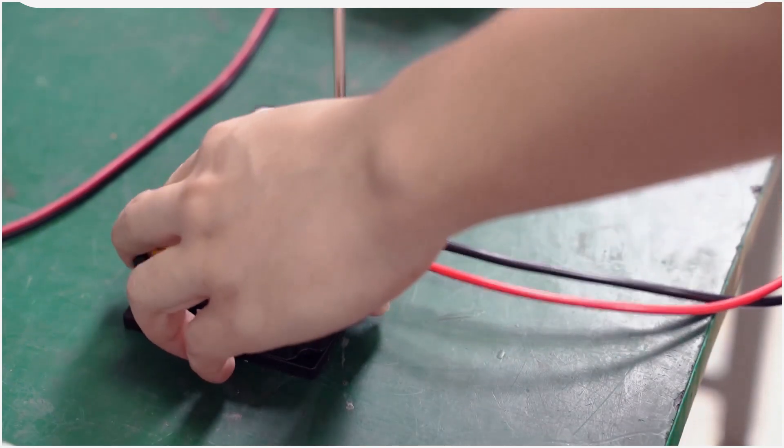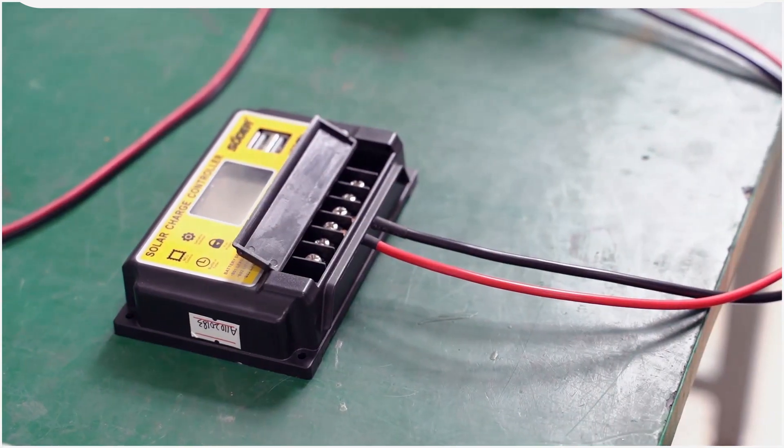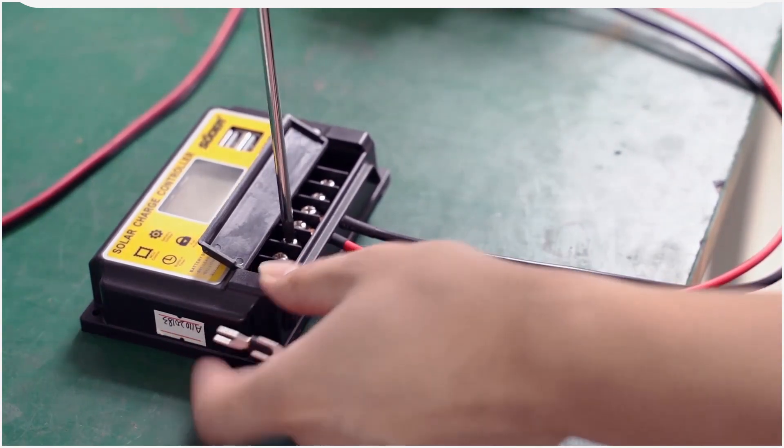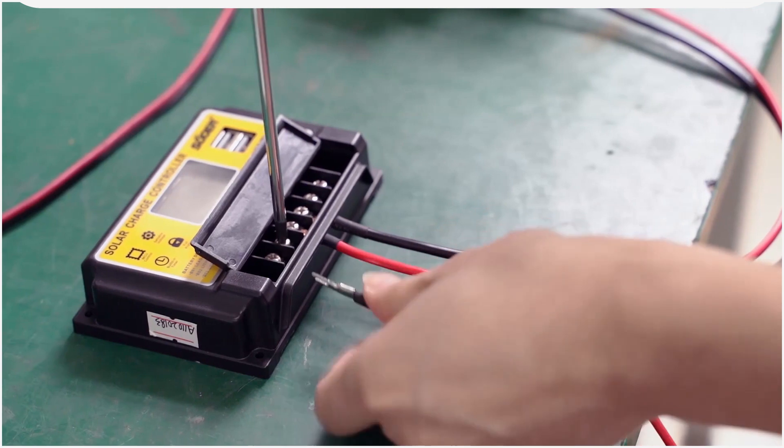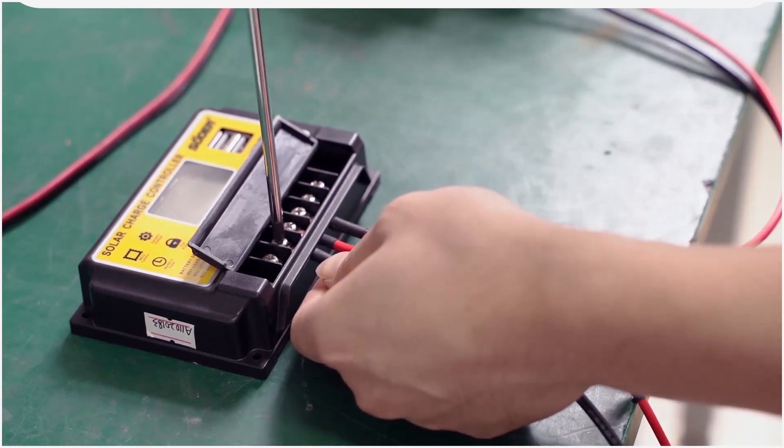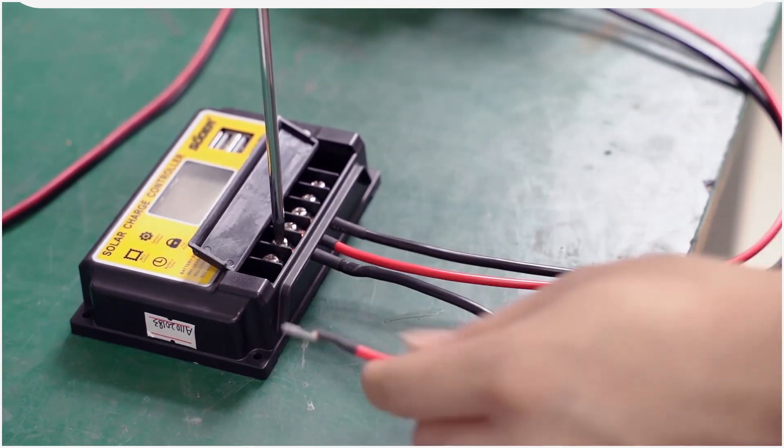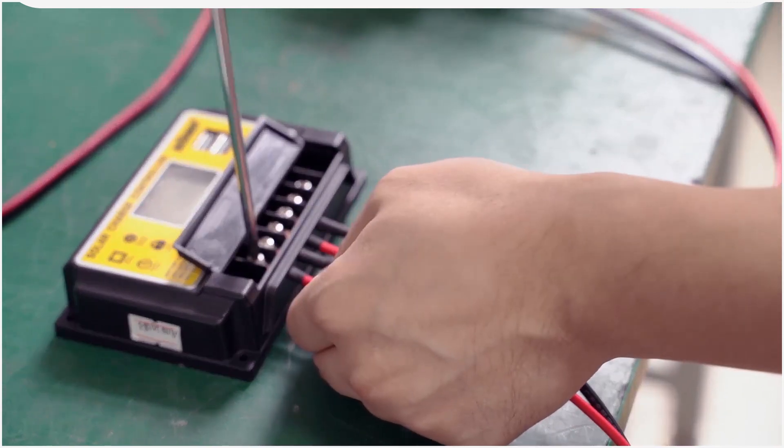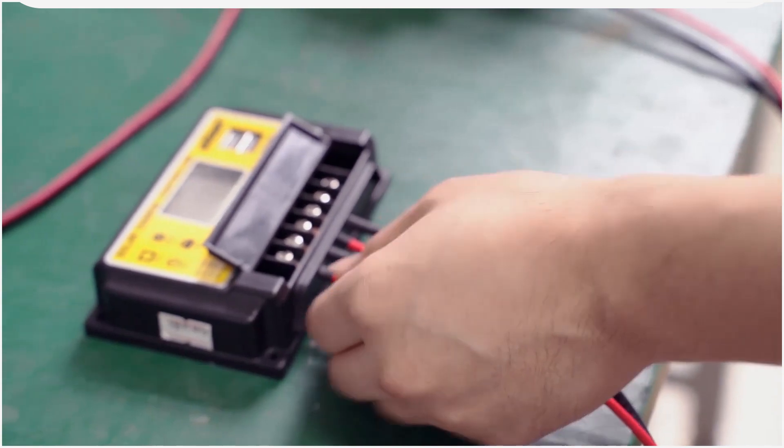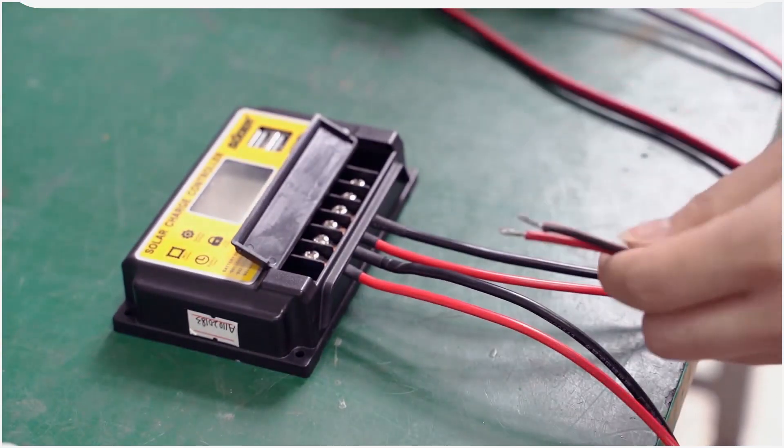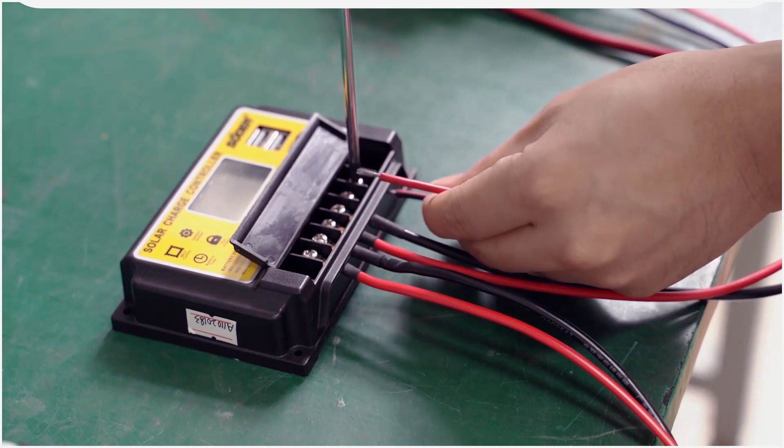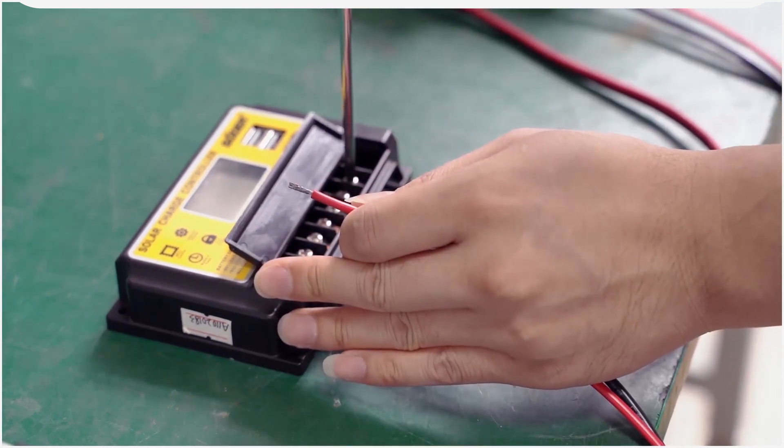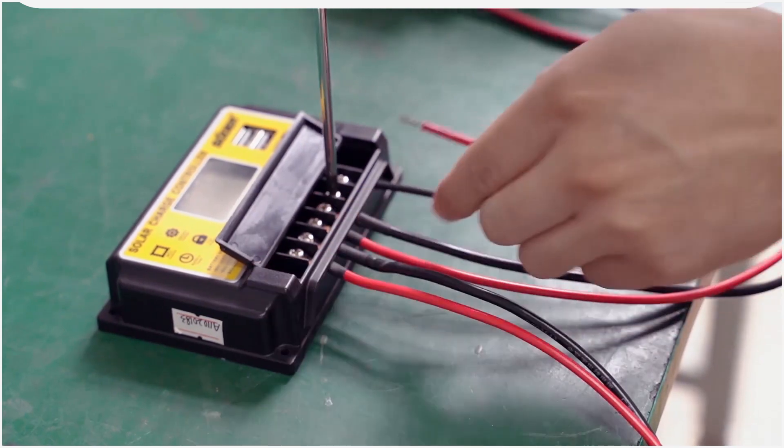How to install the solar charge controller: First, we will connect the battery. After installing the battery, the display will show that the battery system is identified and the current and voltage of the battery. We can choose 12V or 24V battery. Make sure that your battery has enough voltage for the controller to recognize the battery type.